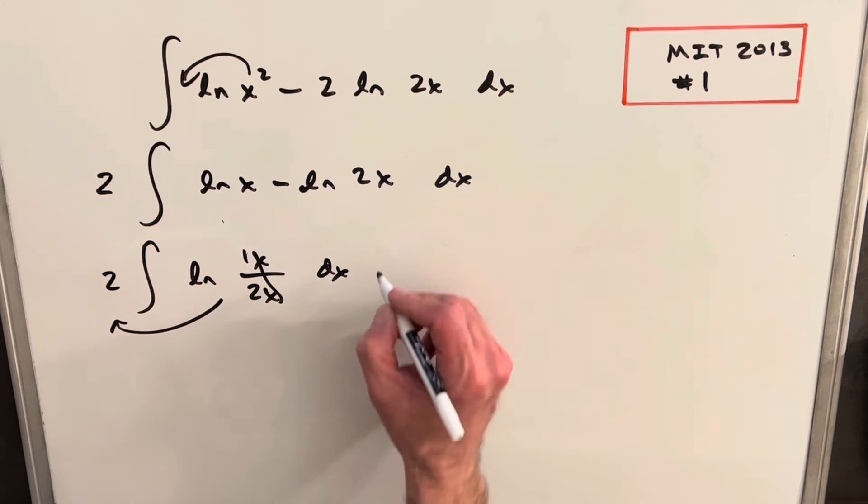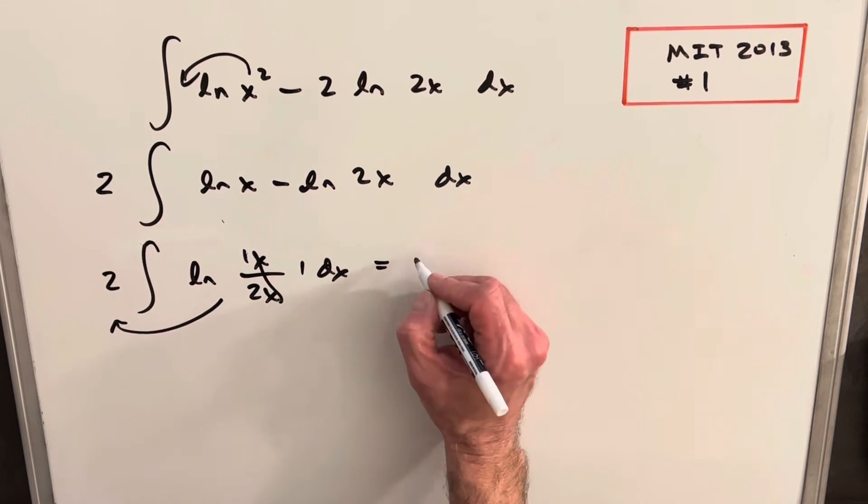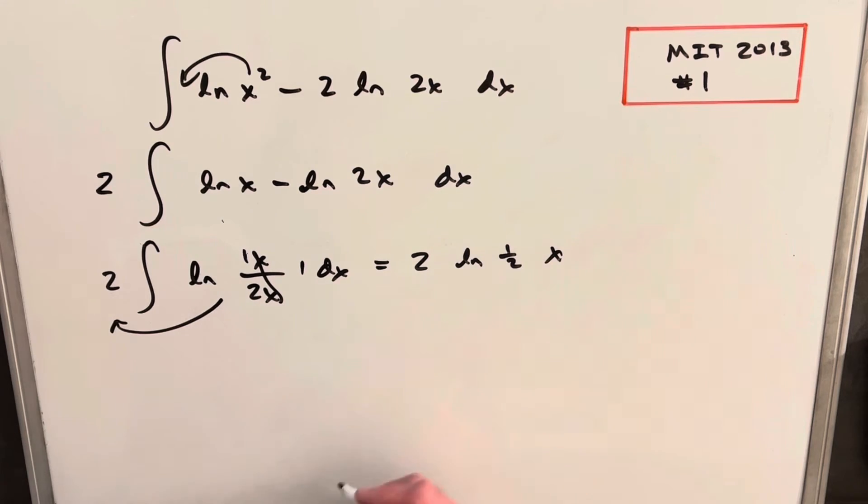We can just go right to our solution, because we're basically integrating 1. So we're going to have 2 ln 1 half times the integral of 1 being x.